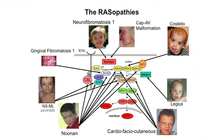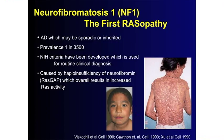NF1 was really the first RASopathy. We've known about it for a very long time — with learning disabilities and all of that, about 50%. It's autosomal dominant, meaning it can be passed down from generation to generation, or it can be a brand new mutation. It's about 50-50: 50% are new mutations, 50% are passed down. From a clinical genetics standpoint, one in 3,000 is actually common for a medical genetic syndrome.